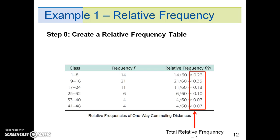The total of the relative frequency should be 1. However, rounded results may make the total slightly higher or slightly lower than 1.